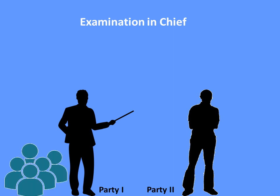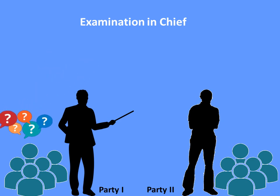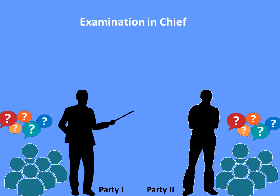Party One comes with his set of witnesses and evidence, and Party Two comes with his own. Party One's witnesses state that events really happened, while Party Two's witnesses say they did not. Party One starts asking questions to his own witnesses, explaining to the court how things actually happened — the whole narration takes place in question-and-answer format. When parties ask questions to their own witnesses, this is called examination-in-chief.